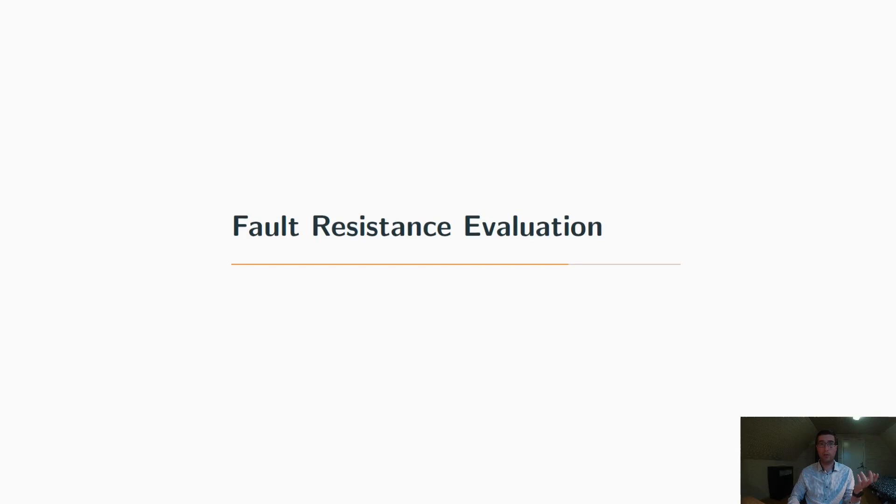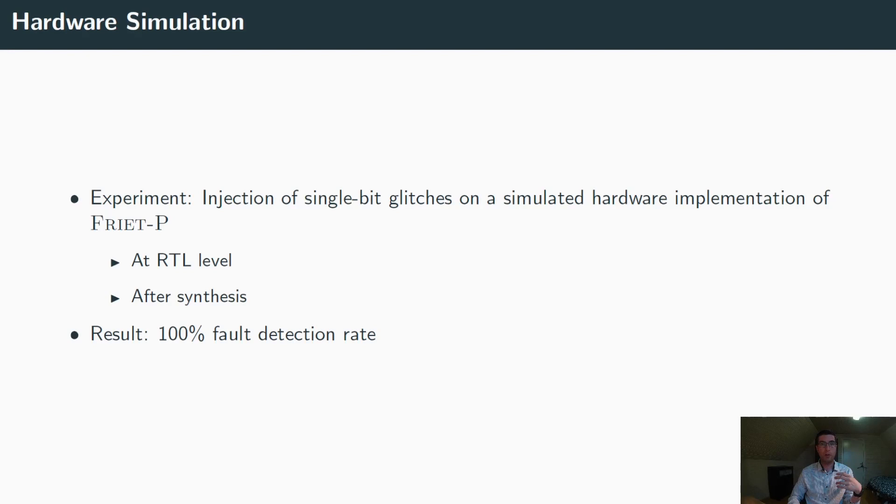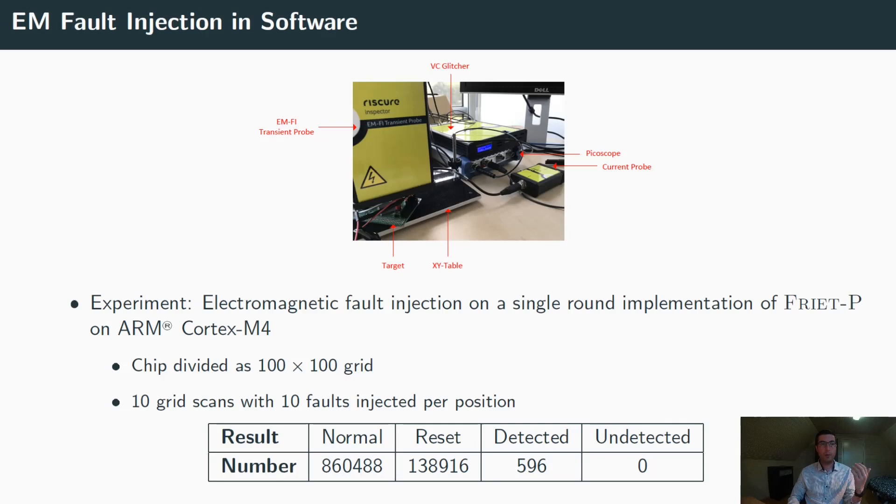In order to validate the fault detection capabilities of our permutation, we did two experiments. The first experiment is more of a sanity check and consisted in injecting single-bit glitches into a simulated hardware implementation of FRIT-P. We injected them both at the RTL level but also after synthesis and this experiment resulted in all the injected faults being detected.